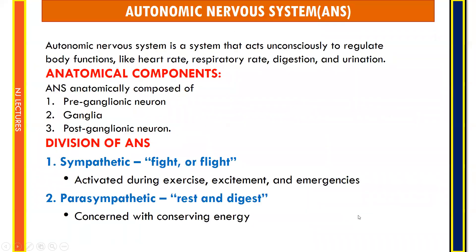The autonomic nervous system is a system that acts unconsciously to regulate body functions like heart rate, respiratory rate, digestion, and urination. It is also called involuntary because it controls body functions automatically according to demand. The ANS innervates cardiac muscles in the heart, smooth muscles in the walls of visceral organs, blood vessels, and glands.